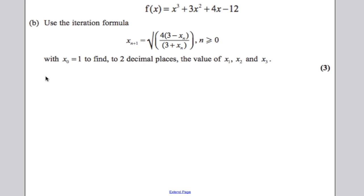So firstly, this is how you do that. You use a calculator and you type in your calculator the following. You're going to type 1, that's your first guess, equals. Then you're going to type in your calculator the square root of 4(3 subtract ANS) divided by (3 plus ANS).